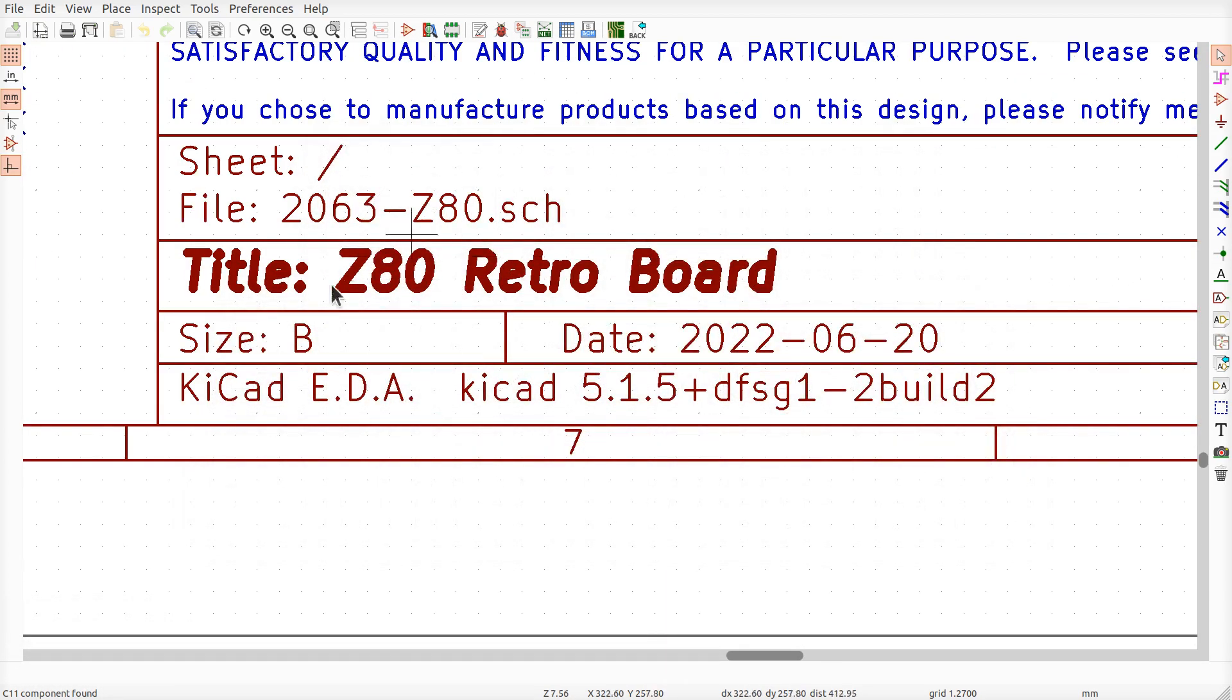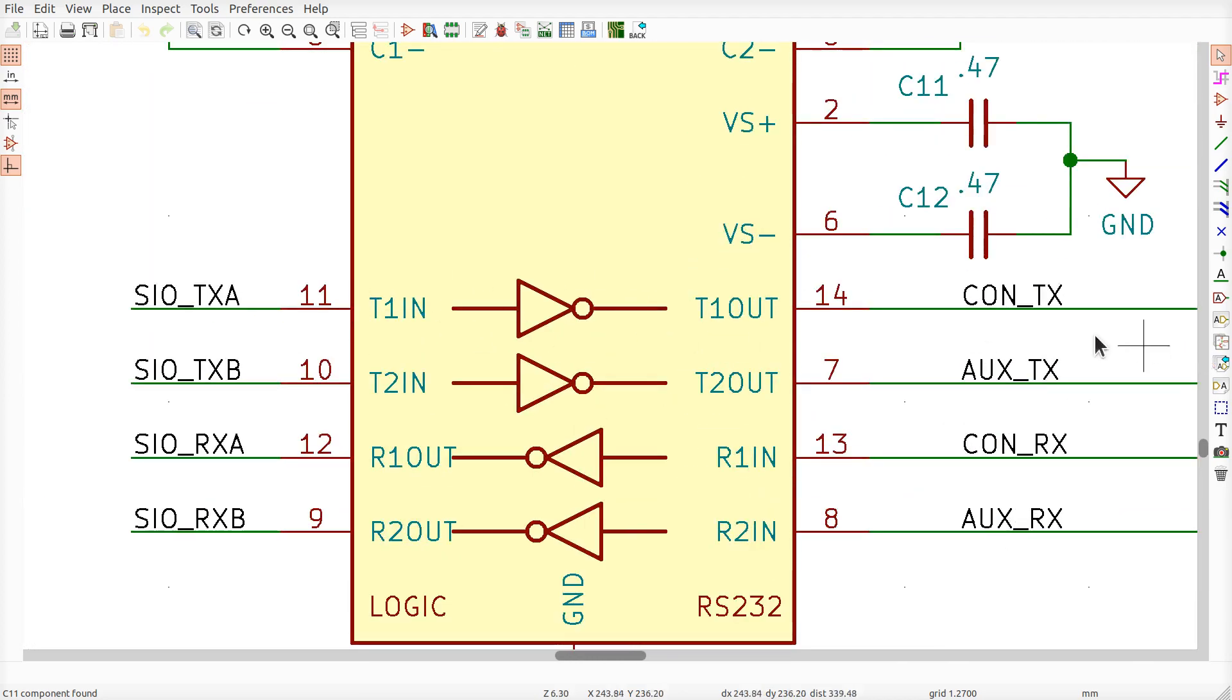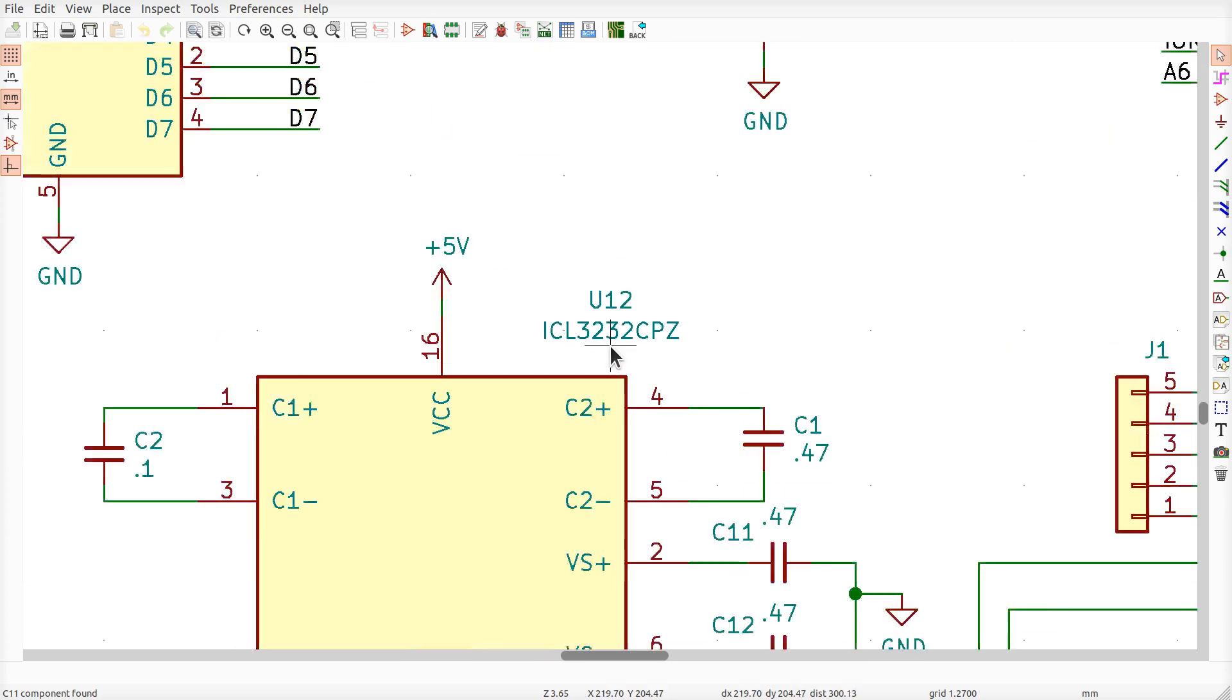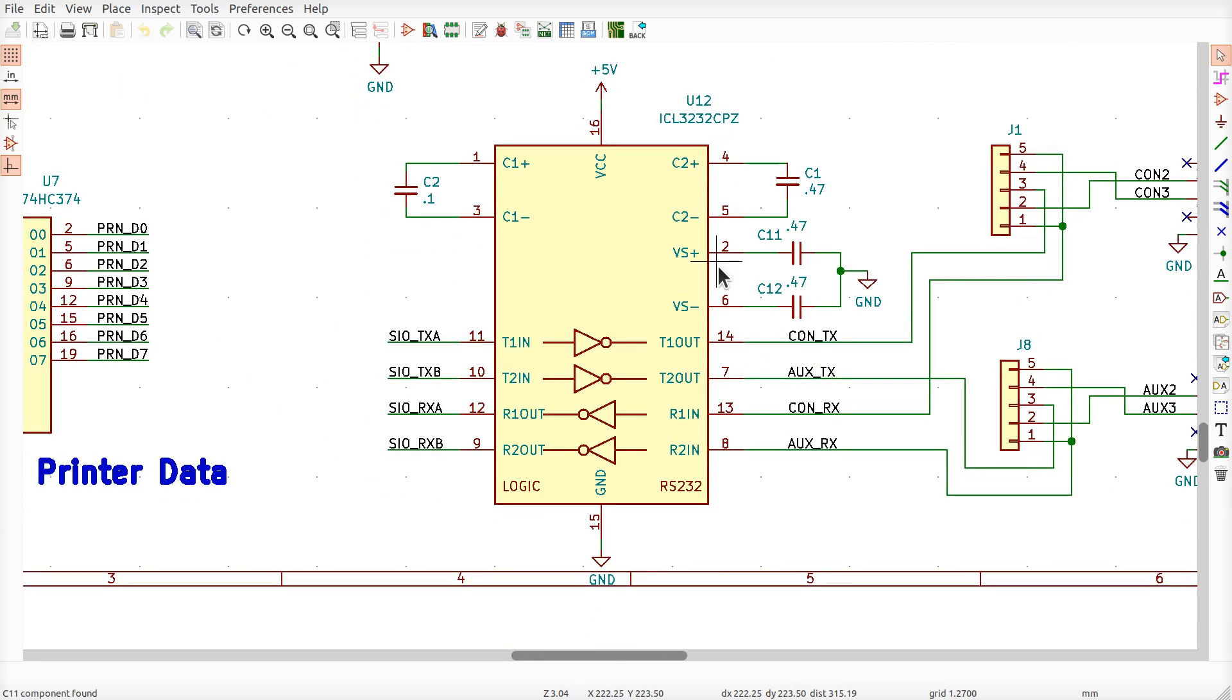You might recall that's the chip on the Z80 Retro board that we use to interface the RS-232 connectors to the SIO. Here we go, 3232 CPZ. Now, when I originally drew the schematic, spoiler alert...